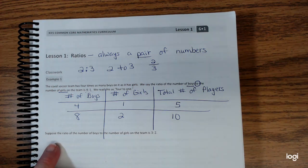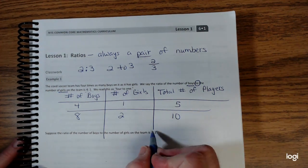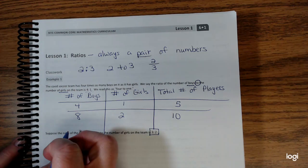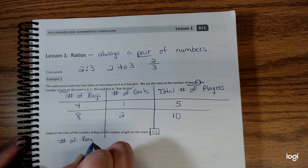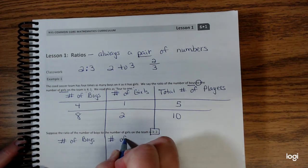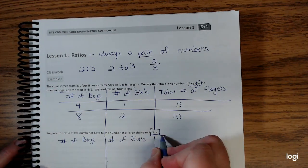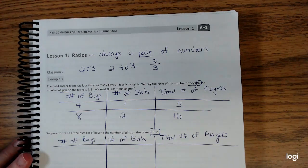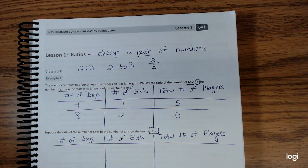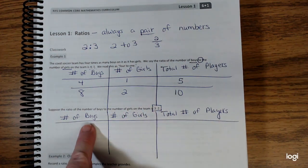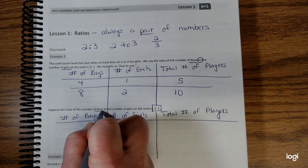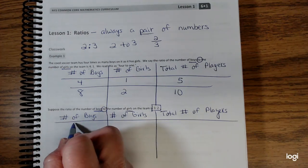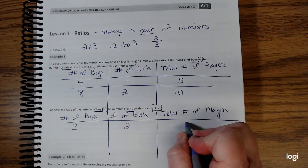Let's move down to the next set where it says suppose the ratio of the number of boys to the number of girls on the team is 3 to 2. Let's make another table: number of boys, number of girls, and total number of players. We have the two numbers 3 and 2, but we need to make sure we put them in the correct column. Is three for the boys or the girls? The first word listed is boys, so three goes for our boys, two goes for our girls, for a total of five players.